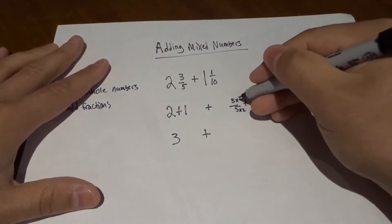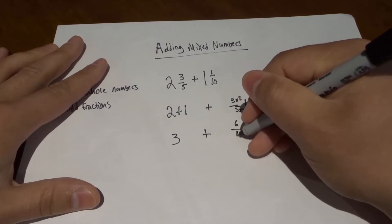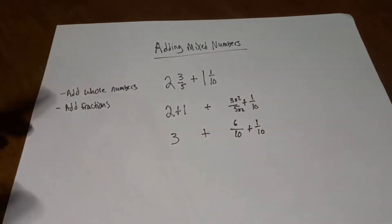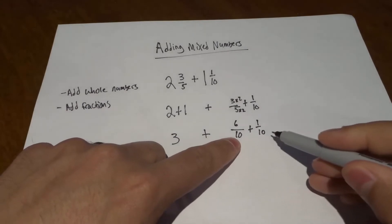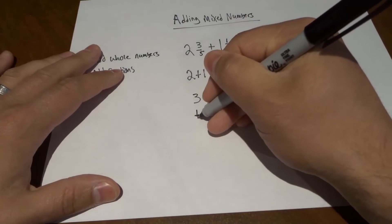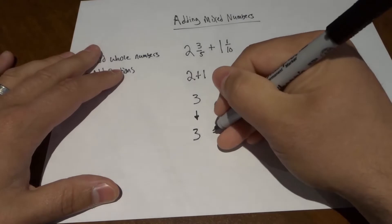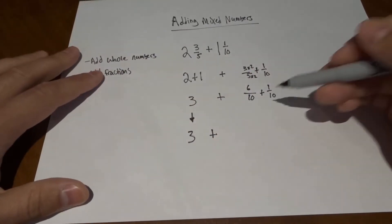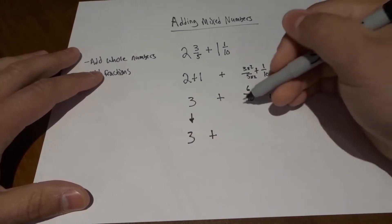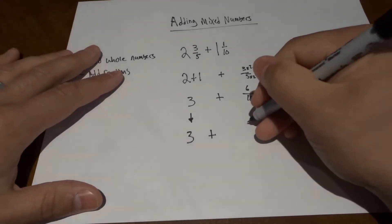Bringing this down: three times two equals six, five times two equals ten. We're going to add that to one over ten — we didn't have to touch the one over ten, and as you can see we now have the same denominator. So we're going to add six over ten plus one over ten. The denominators are already the same, so we just add the top numbers: six plus one equals seven.